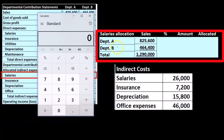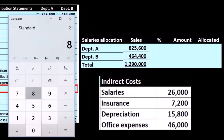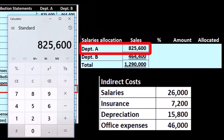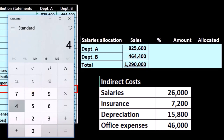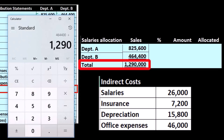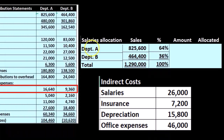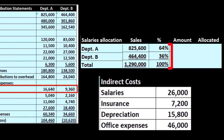Here's sales for Department A and here's sales for Department B, and there's the total sales. We take 825,600 divided by the total 1,290,000, which gives us 64%. Then we take 464,400 divided by 1,290,000, which gives us 36%. So our percentages are 64% and 36%, and those add up to 100%. Now we have our percentages and we can proceed from there.